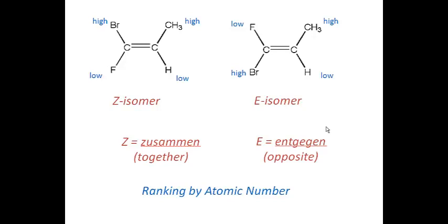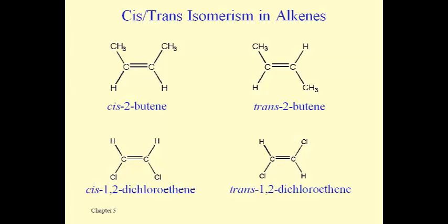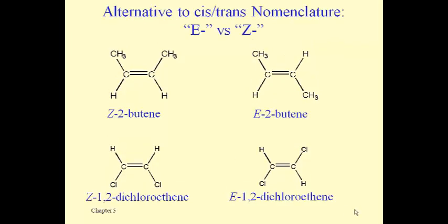This E/Z system still works with anything we would call cis and trans, but cis and trans are used wherever they are appropriate. When all four substituents are different things, it's not possible to use cis and trans. The next slide shows the same four molecules re-designated as either Z for together or E for opposite. Things that are cis tend to correspond to Z and things that are trans tend to correspond to E, although that's not always the case. The advantage of E and Z is that any alkene with different isomers can be given an appropriate name, so you should be able to assign the correct E or Z label when naming a structure.